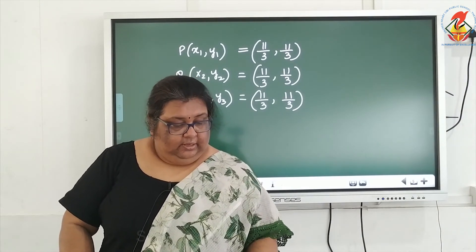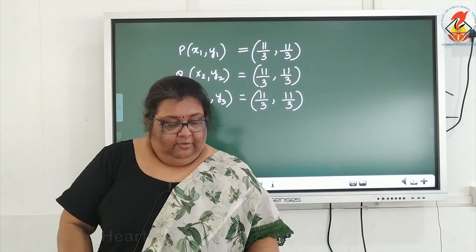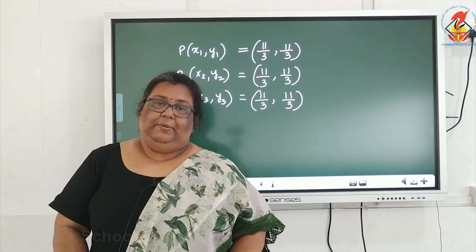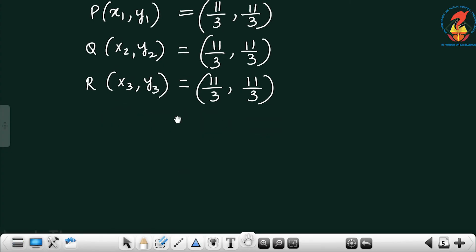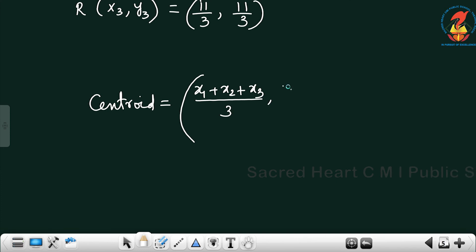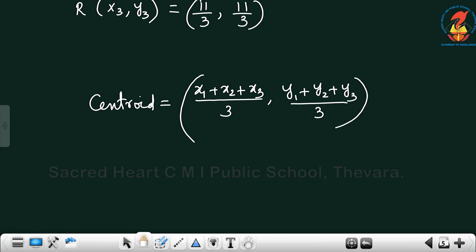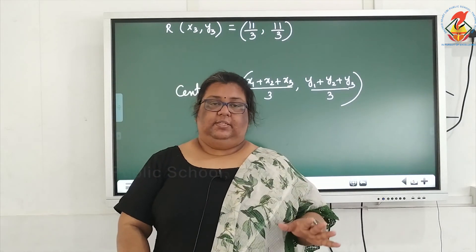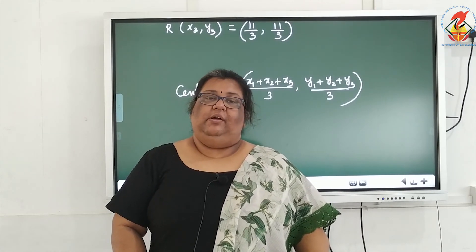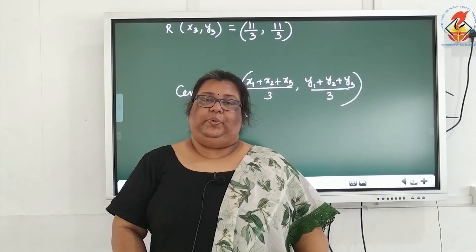The fifth subdivision: if A, B, C are the vertices of the triangle, find the coordinates of the centroid of the triangle. Centroid means where all three medians meet. The formula to find the centroid is the ordered pair: (x1 plus x2 plus x3) by 3, (y1 plus y2 plus y3) by 3. These are the five subdivisions for question number 7 in the exercises of coordinate geometry.